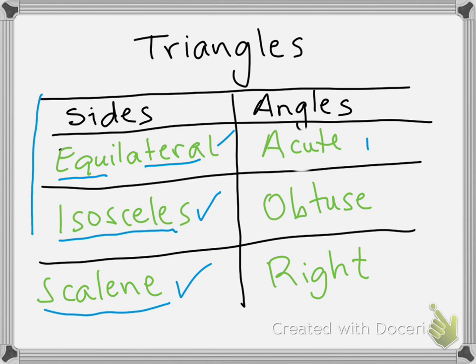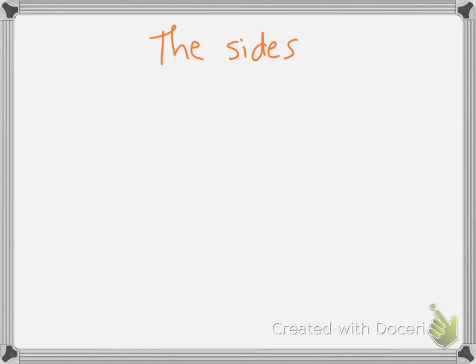By the angles, we have acute triangle, which is a triangle with three acute angles. Obtuse triangle — that's a triangle with at least one obtuse angle. And then a right triangle, which is a triangle with one right angle. So we're going to use this template to help us classify triangles.